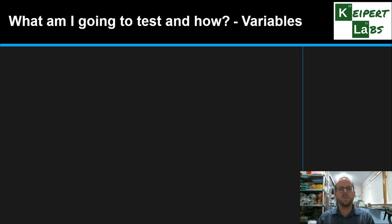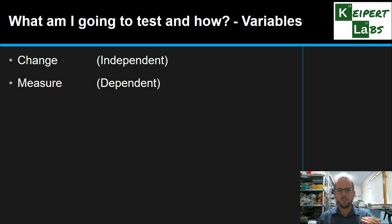So this brings us to what we call our variables. There is another Kaipit Labs video specifically on variables, so I'll let you watch that through for some extra detail. But essentially in an experiment, we have three types of variables. A variable is anything that can change in an experiment. It can vary.